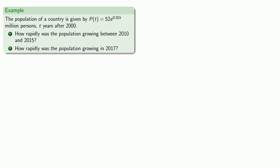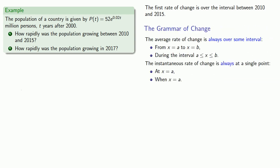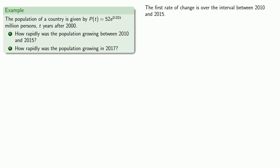If we take this question apart, we see that the first rate of change is over the interval between 2010 and 2015. Remember that the average rate of change is always over some interval from somewhere to somewhere. That's exactly what we have here. We need to know the population in 2010 and the population in 2015.